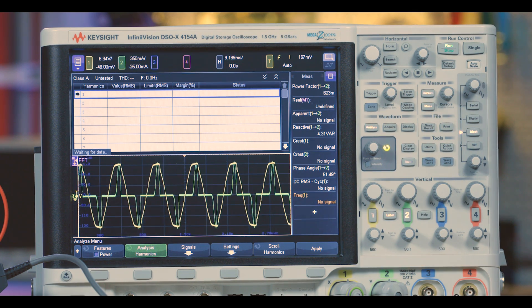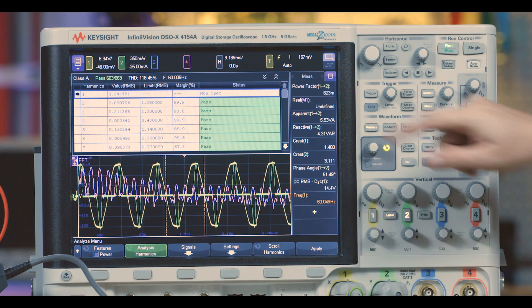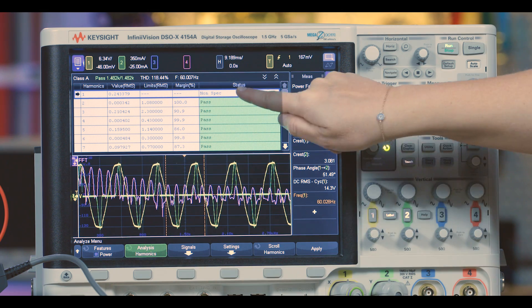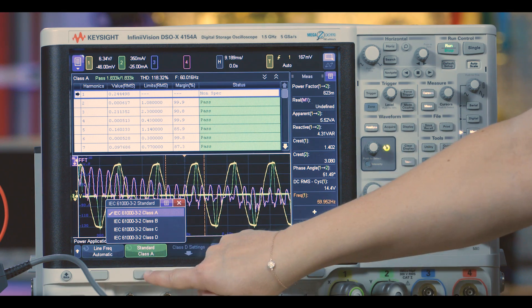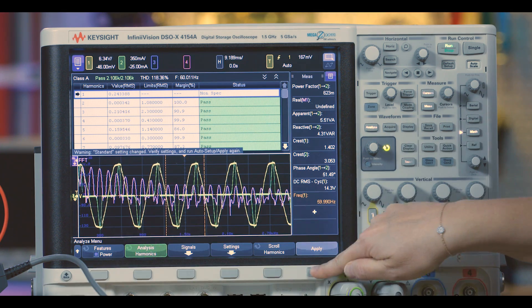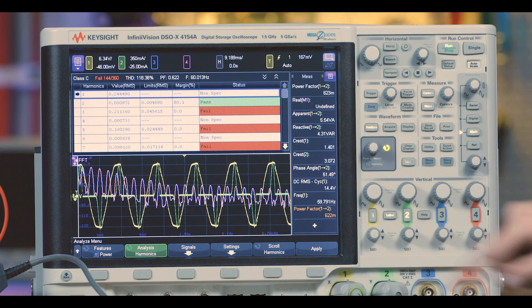The scope performs an FFT on the current waveform and the results are listed in the top of the screen. It also measures total harmonic distortion and tells me if I've passed or failed the test. To show you an example of what happens when we fail, I'll change the standard that I have to comply with. Now you can see where the design would not pass these regulations and by what margin.